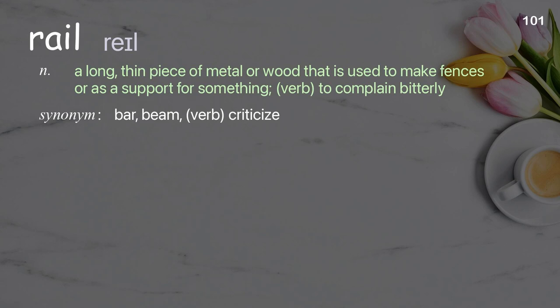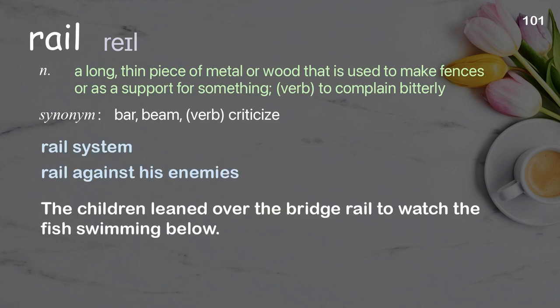Rail: a long, thin piece of metal or wood used to make fences or as a support for something. Verb: to complain bitterly. Examples: rail system, rail against his enemies. The children leaned over the bridge rail to watch the fish swimming below.